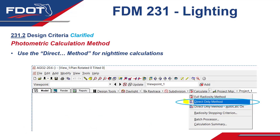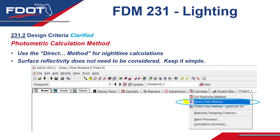Next, we'll move to Section 231.2, Design Criteria, where we've clarified the requirements for photometric design and the calculation method that should be used. For years, the FDM has explained to use the illuminance method instead of the luminance method. In the photometric design software, that translates to using the direct method for nighttime calculations, as shown here in the AGI 32 design software. With the illuminance method, surface reflectivity does not need to be considered. The direct-only method is capable of supporting solid objects that may block the light, but does not require surface reflectivity, keeping things simple given the wide range of pavement types on FDOT roadways.